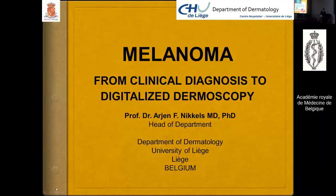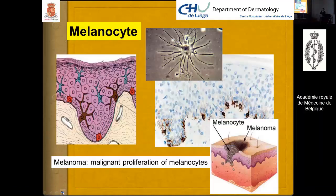Melanoma is defined as a malignant biodegradation of melanocytes. Melanocytes are located in the basal cell layer of the epidermis. This culture beautifully illustrates the dendritic extensions of melanocytes, which are used to feed the keratinocytes with melanosomes, helping the genetic material avoid incineration.